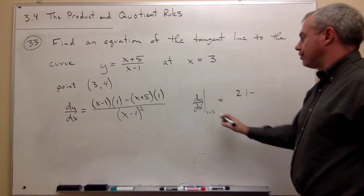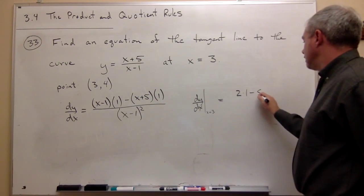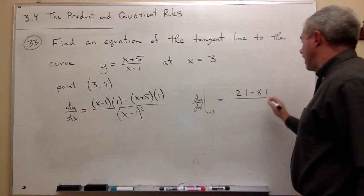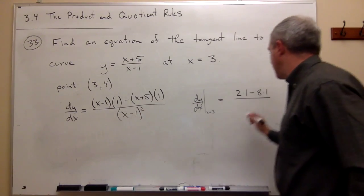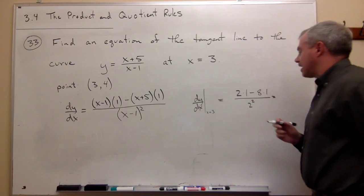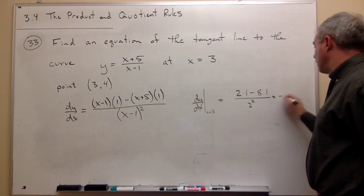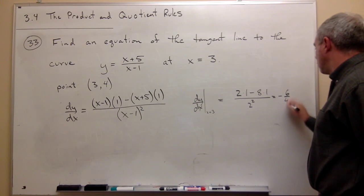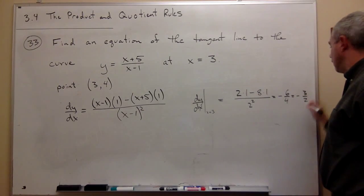if I plug in 3, I get 3 minus 1, which is 2 squared. So I get 2 minus 8, which is minus 6, divided by 4. So I get minus 6 over 4, which could also be written as minus 3 over 2.